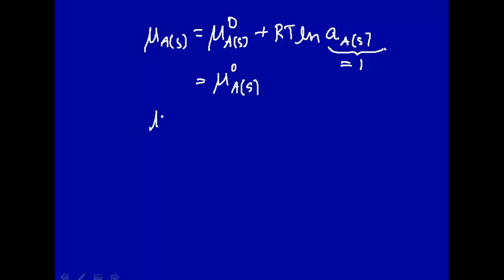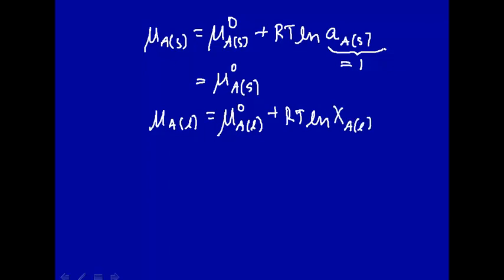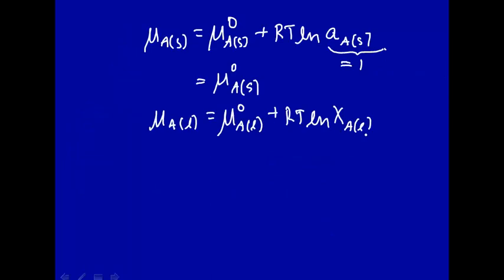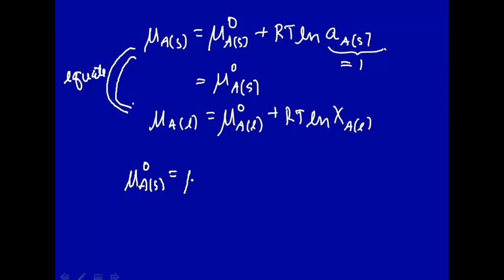Now let's do the same for the chemical potential of A in the liquid state. That's the standard state chemical potential of A in the liquid state, plus RT times the natural log of the mole fraction of A in the liquid state. In other words, we have A mixed in with the solvent, and the mole fraction of A is what we mean by A in the liquid — which is actually the solvated state. So at equilibrium, the standard state chemical potential of A solid equals the standard state chemical potential of A liquid, plus RT times the natural log of the mole fraction of A in the liquid.